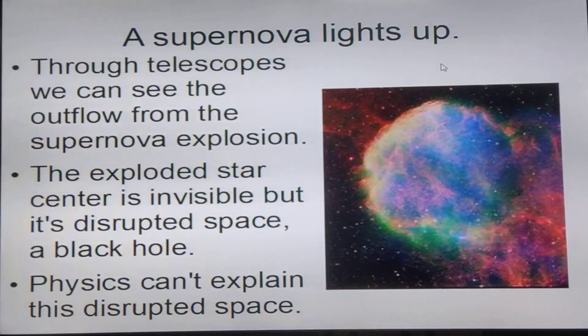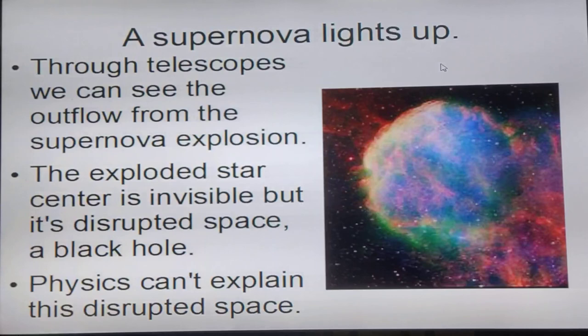So if you look at a supernova through a telescope, you can see the explosion happening. You can see matter coming off of it. But if you try to look inside what's happening inside the star itself, that's invisible. The core now becomes disrupted space, and it's a black hole.